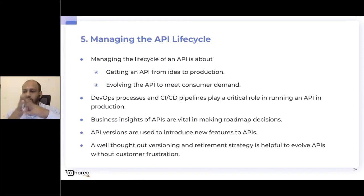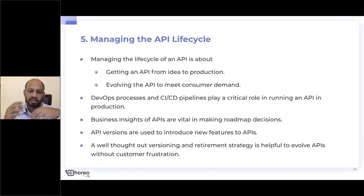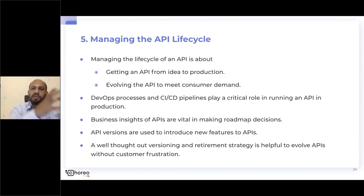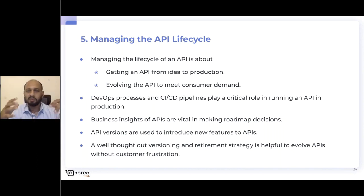The final pillar is the API lifecycle. I see it as two main things: getting your API from development to production, and once in production, how do you evolve it. Managing the lifecycle covers both aspects. You have to deal with typical DevOps processes — CI/CD pipelines — to get it up and running. The starting point is iterating fast on your concept and design: come up with a contract, mock data corresponding to that contract, and bring in potential consumers to get their feedback.